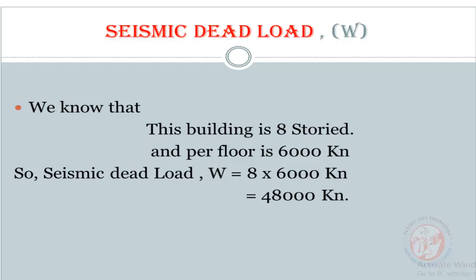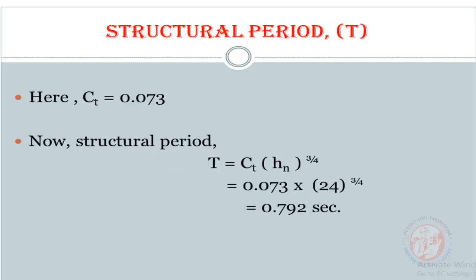Structural period T equals Ct times hn to the power 3/4. You know that Ct equals 0.073, so T equals Ct times hn to the 3/4, which results in 0.792 seconds.